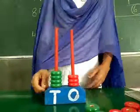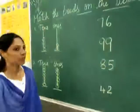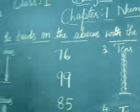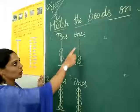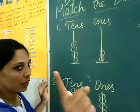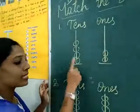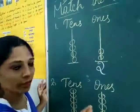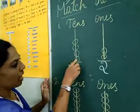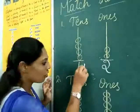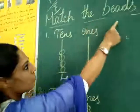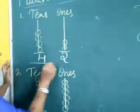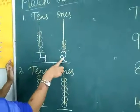Now we will solve some sums on the abacus. Match the beads on the abacus with the number. You have to count the beads. Each bead in the ones place represents one, and each bead in the tens place represents one ten. In the ones place, there are 2 beads — write two. In the tens place, count: one, two, three, four — that means four tens. So the number is forty-two. Just match forty-two.